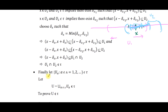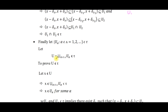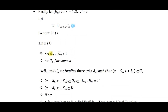Finally, we take an arbitrary collection of elements from τ — that is, {U_α : α ∈ Λ} ⊆ τ — and we have to prove that their union also belongs to τ. Let U = ∪_{α∈Λ} U_α. We take an element from U: x ∈ U means x ∈ ∪U_α, which means x belongs to some U_α for some α.